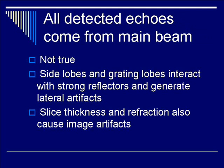Finally, the assumption that all detected echoes come from the main ultrasound beam is sometimes erroneous. Even in today's array ultrasound probes, you will still see side lobes and grating lobes interacting with strong reflectors within the body, generating lateral artifacts. In other words, the main part of the image will be cluttered with artifacts from adjacent structures that sometimes are not even from the plane of interest. Specifically, slice thickness and refraction can cause many of these image artifacts.